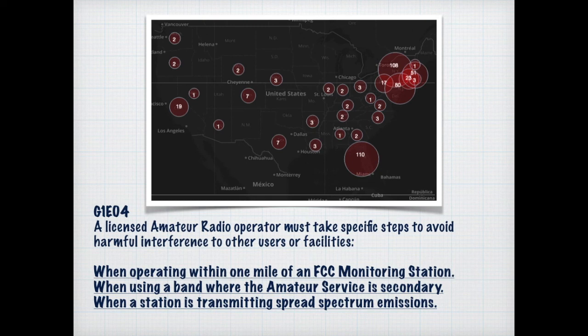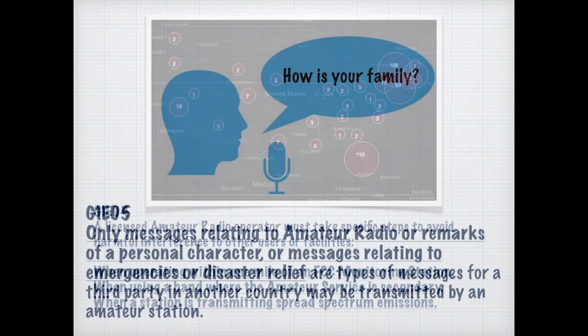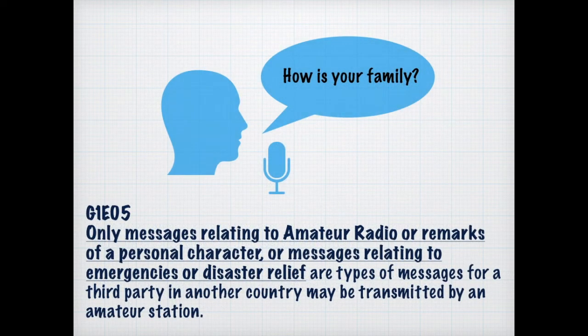Amateur radio is all about not causing harmful interference. A licensed amateur radio operator has to take specific steps to avoid harmful interference with other facilities such as FCC monitoring stations, using amateur services as a secondary station or secondary privilege, and stations transmitting spread spectrum emissions. We're considered kind of ambassadors when talking over the radio to other countries. We're only supposed to be relaying amateur radio comments, remarks of personal character, or messages relating to emergencies or disaster relief.